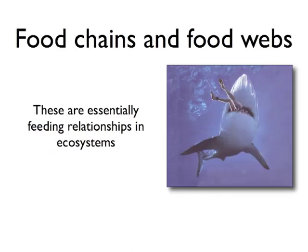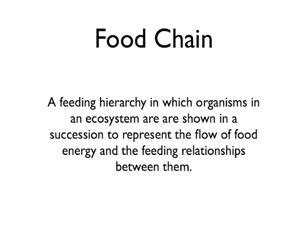As has already been stated, the biotic components of the ecosystem interact with each other. The most common way that we see living things interact with one another is through feeding relationships. When studying specific ecosystems, environmentalists examine the feeding relationships to better understand how the ecosystem functions. Feeding relationships are usually shown in diagrams called food chains or food webs. A food chain is a feeding hierarchy in which organisms in an ecosystem are shown in a succession to represent the flow of food energy and the feeding relationships between them.